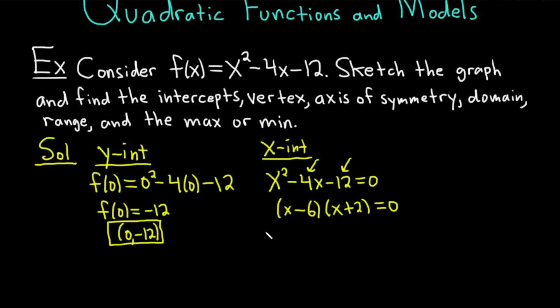We have a product equal to 0. So you set each factor equal to 0. So you get x - 6 = 0 or x + 2 = 0. In the first equation, we can add 6 to both sides. So we get x = 6. That's one of our x-intercepts. I'm going to put it in a box. And in the second equation, we subtract 2. So we get x = -2. That is our second x-intercept. So I will put it in a box. We've found the intercepts pretty easy.